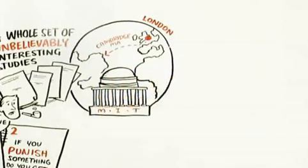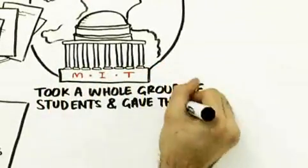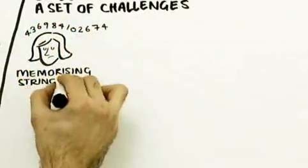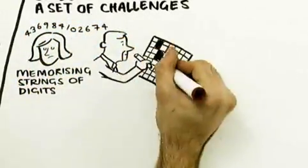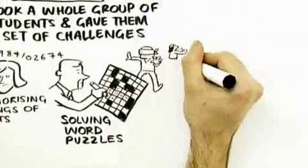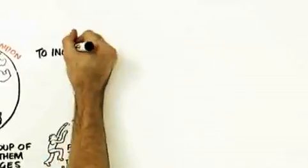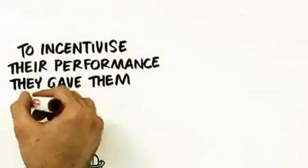Here's what they did: they took a whole group of students and gave them a set of challenges - things like memorizing strings of digits, solving word puzzles, other kinds of spatial puzzles, even physical tasks like throwing a ball through a hoop. They gave them these challenges and to incentivize their performance, they gave them three levels of rewards.